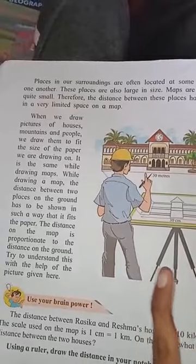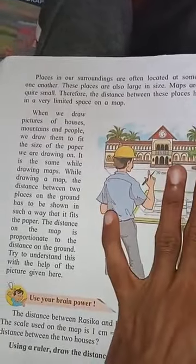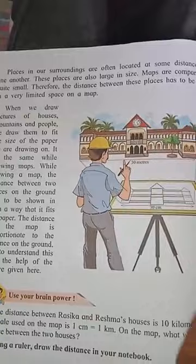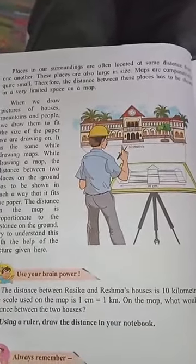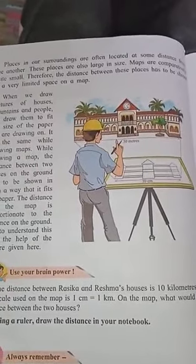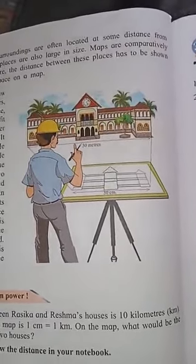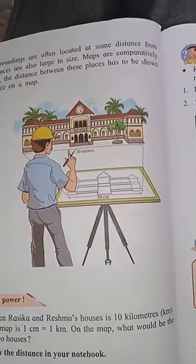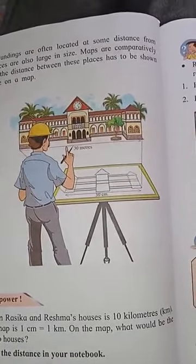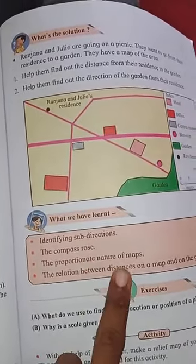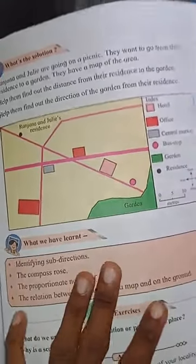Distance on the map is proportional to the distance on the ground, so we have to understand while drawing the map how many meters or centimeters of distance we are going to keep. Always use a ruler whenever you draw any distance or line in your notebook. Today we have studied four main directions, four sub-directions, and the three things to remember while drawing a map.